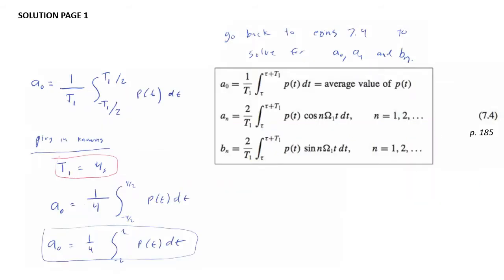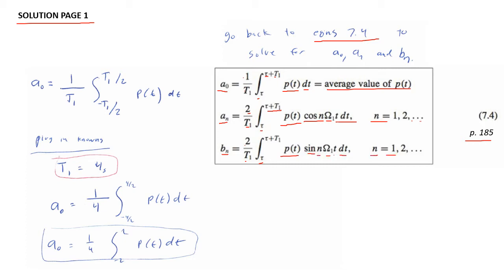With the setup page complete and the governing equation selected, we start our solution. From equation 7.2, we need coefficients a₀, aₙ, and bₙ, which come from equations 7.4 on page 185. So a₀ = (1/T₁)∫p(t)dt, which is the average value of p(t). Then aₙ = (2/T₁)∫p(t)·cos(nω₁t)dt for n = 1, 2, ... And bₙ = (2/T₁)∫p(t)·sin(nω₁t)dt for n = 1, 2, ...